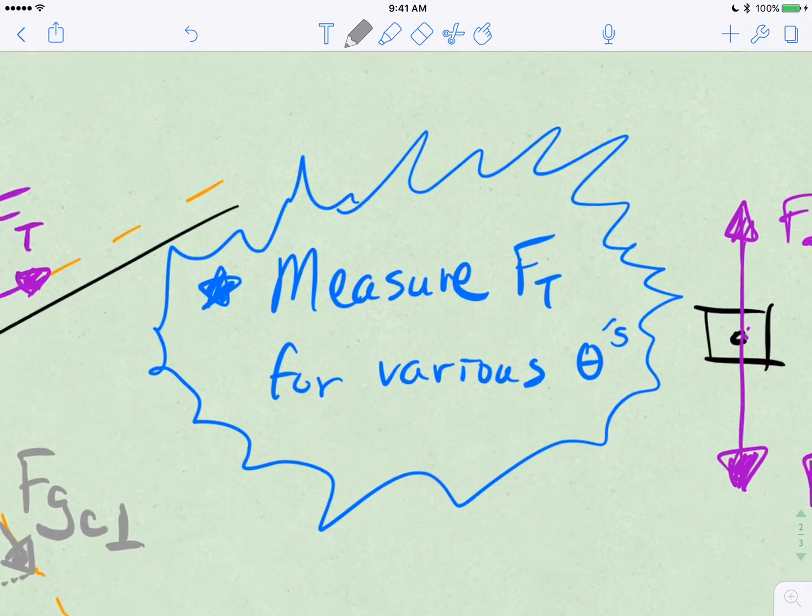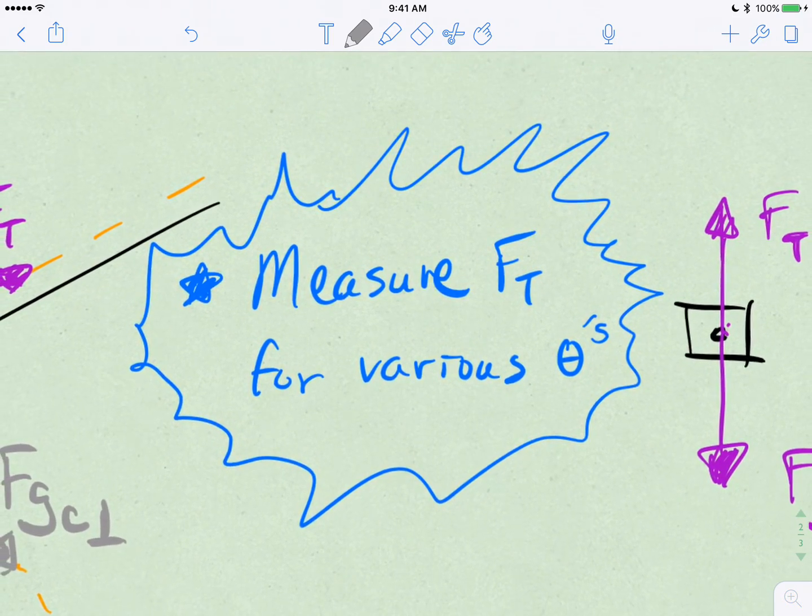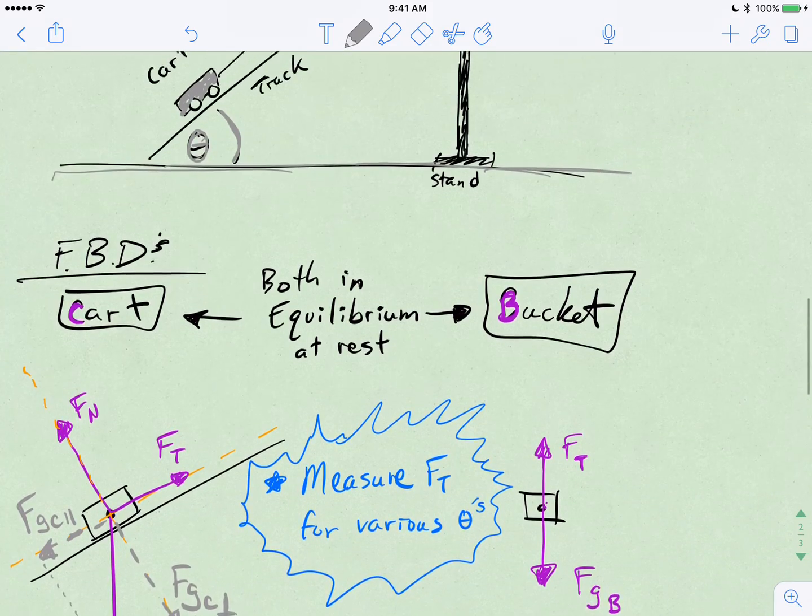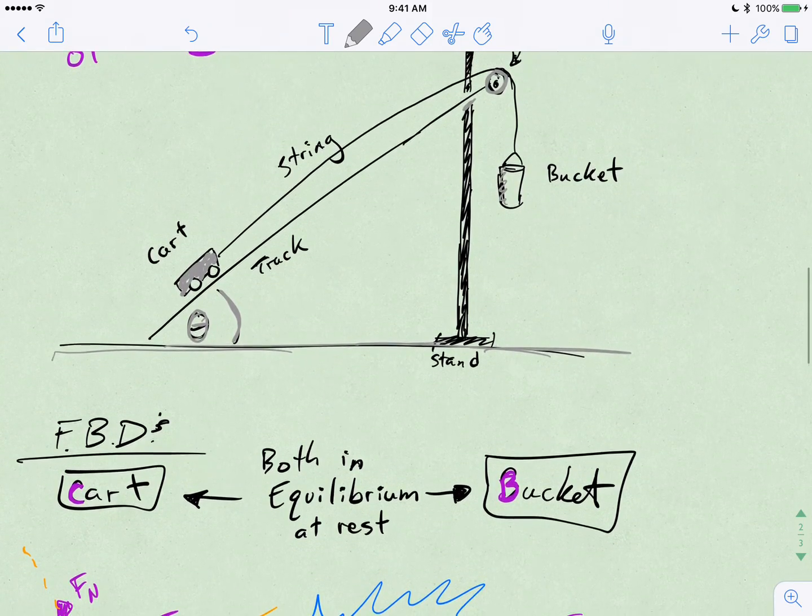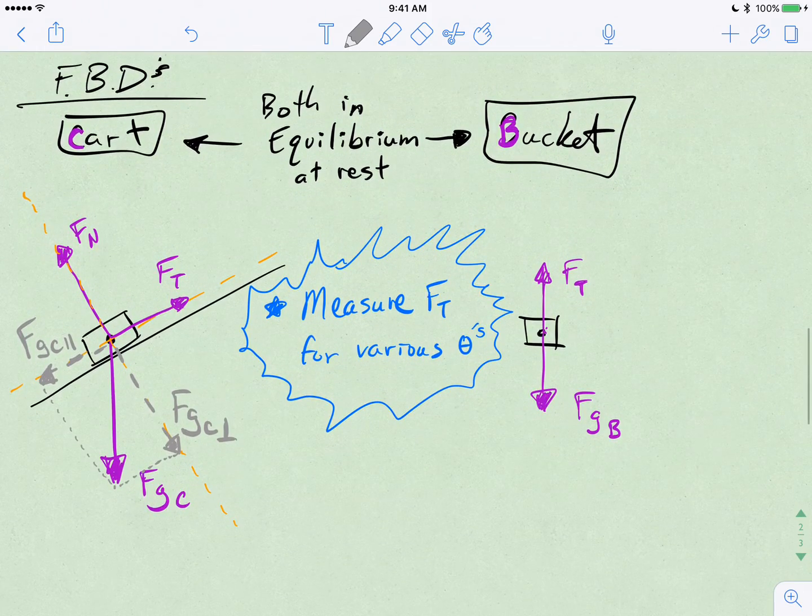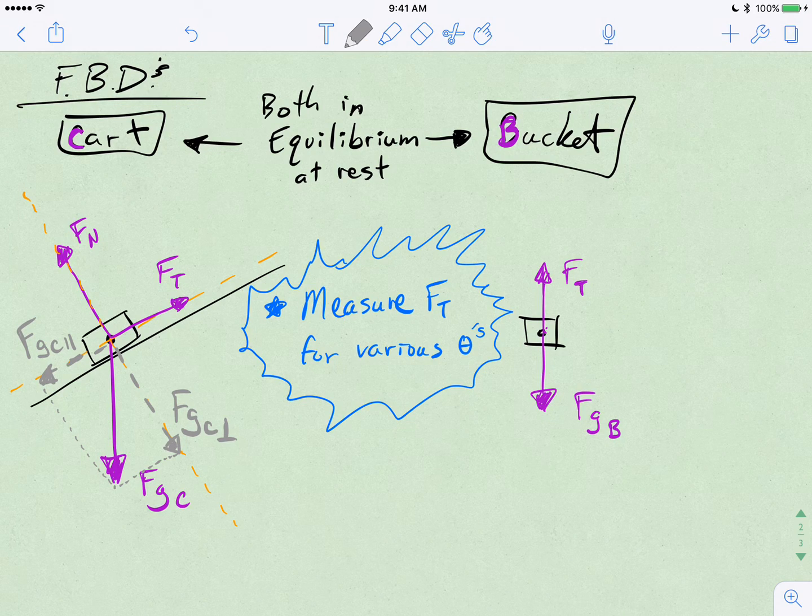And if we were to measure the force of tension for various thetas, various angles of the ramp, as we make the ramp steeper or less steep, we'll see a relationship come out of here. And that's because if you look at the FT with the cart, it has to be equal and opposite to the parallel component of the weight. Now, a pretty cool thing happens here, actually.